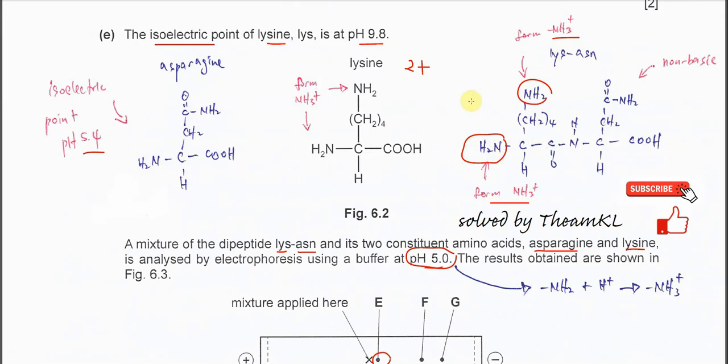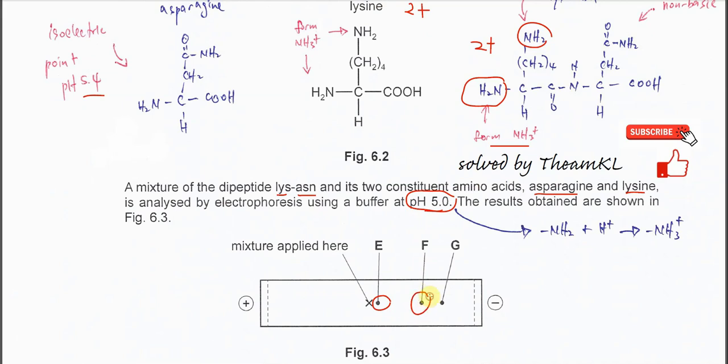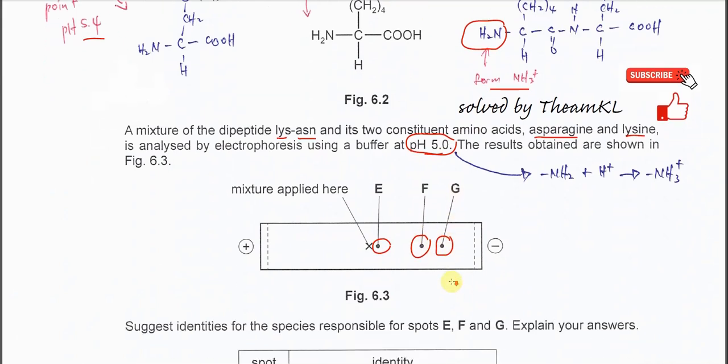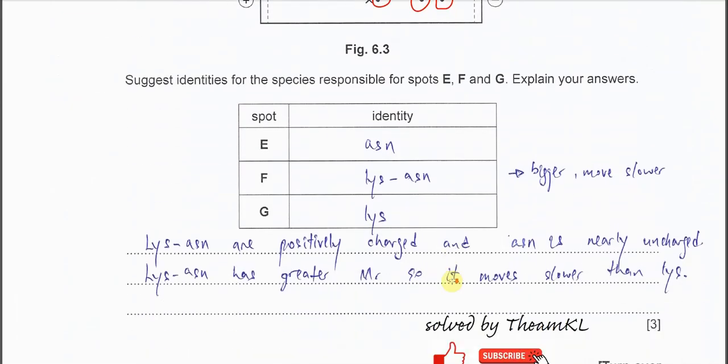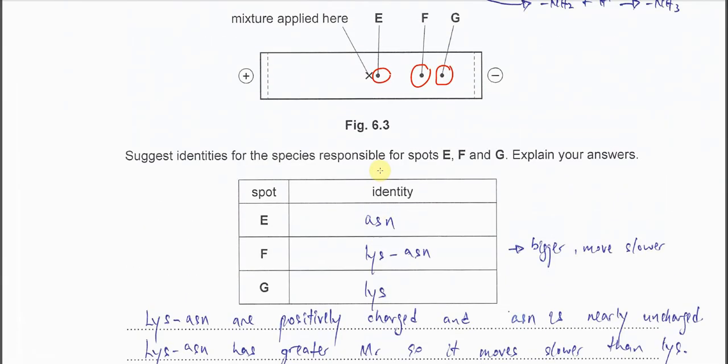The dipeptide will form two positive charges under pH 5. Now which one is larger? Of course the dipeptide is much larger, it moves slower. The lysine is smaller, moves faster. That's why spot F is for the dipeptide and G is for the lysine. The spot E is the ASN, F is the dipeptide, G is the lysine.